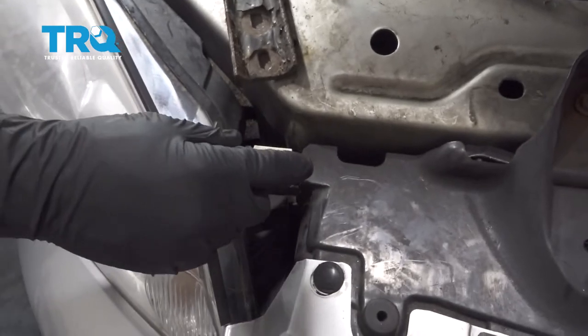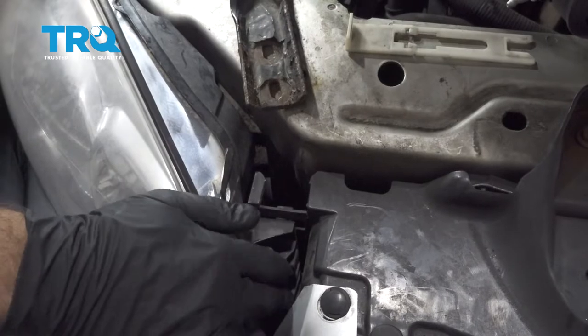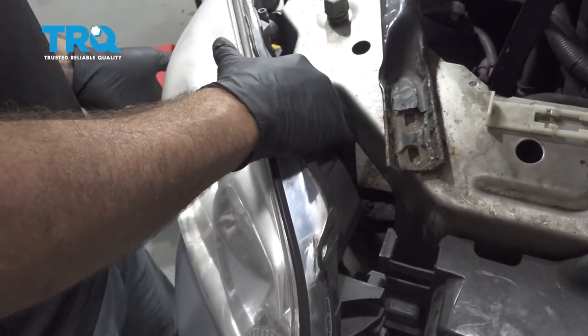On the front section, you'll want to pull up on this plastic clip, pop that out, and set that aside. Grab the lamp assembly, pull it forward, and wiggle it free from the fender.